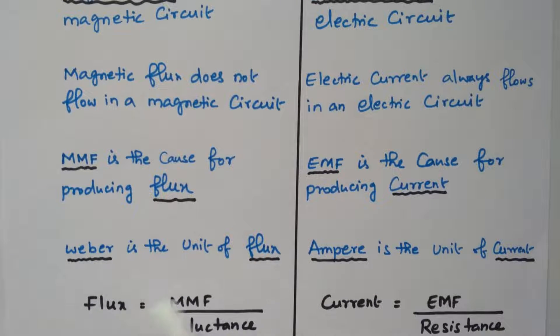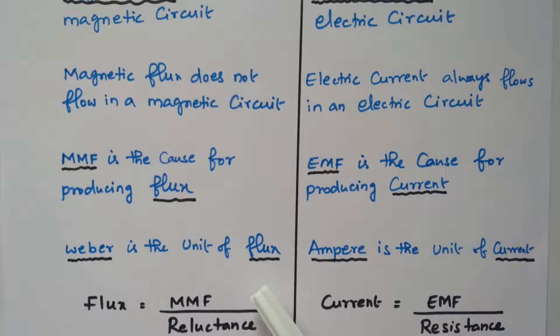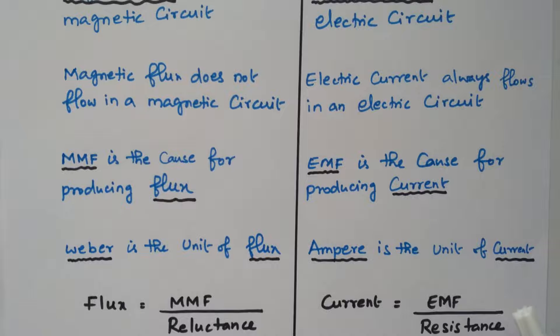The unit for flux is Weber, and the unit for current is Ampere. It is clear that flux in the magnetic circuit is equivalent to current in the electric circuit.